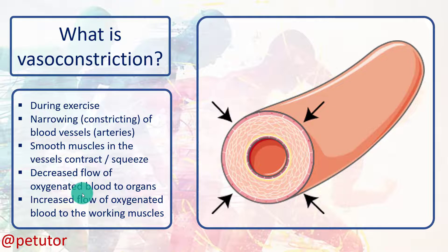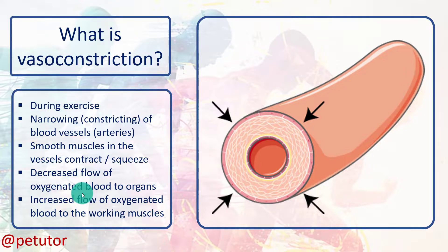Just to recap: this often happens during exercise where the working muscles require more oxygenated blood in order to contract and move, which means that the blood vessels around the organs will vasoconstrict so that more blood goes to the working muscles. The opposite of this is vasodilation.